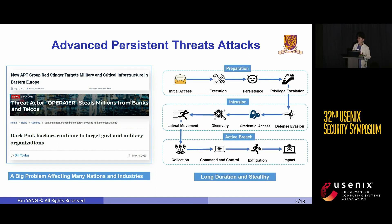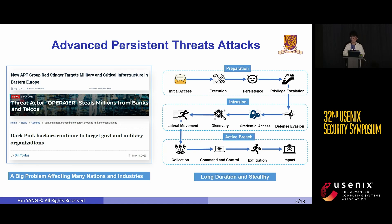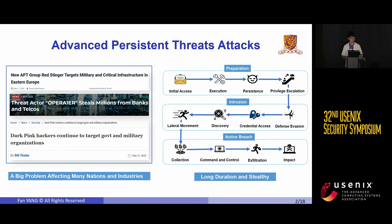Understanding APT actors' motivations and operations is crucial to addressing these threats. As shown in the picture, the APT attack chain consists of three stages, each with corresponding phases. These long-duration attack patterns differ fundamentally from conventional one-shot attacks, making traditional intrusion detection systems unsuitable for APTs because they are better suited for identifying short-term anomalies.